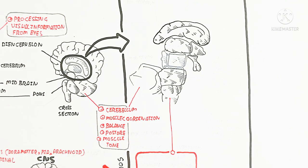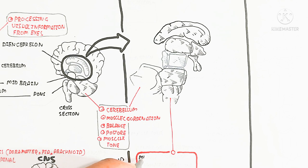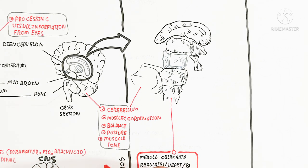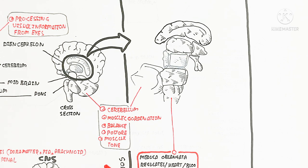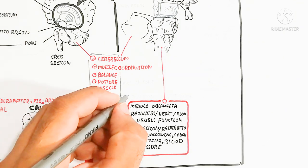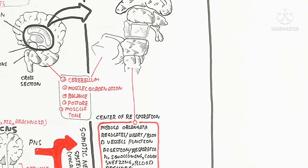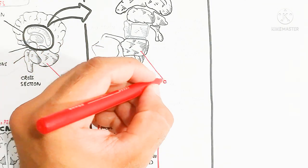The center of respiration is known as the medulla oblongata. The medulla oblongata regulates heartbeat, blood vessel function, digestion, respiration, swallowing, coughing, sneezing, and blood pressure. For example, the breathing mechanism is controlled by it, blood vessel function is controlled by it, heartbeat is controlled by it, and the whole process of digestion is controlled by it.